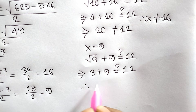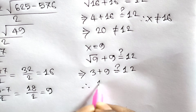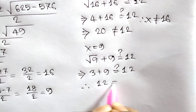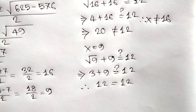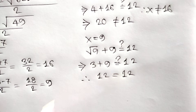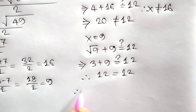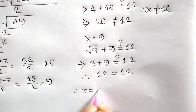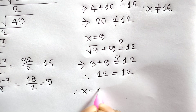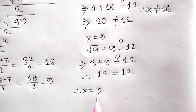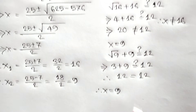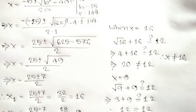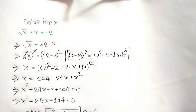When x is equal to 9, square root of 9 plus 9 — is it equal to 12? That is 3 plus 9 equals 12, which is equal to 12. So finally the value of x is equal to 9.